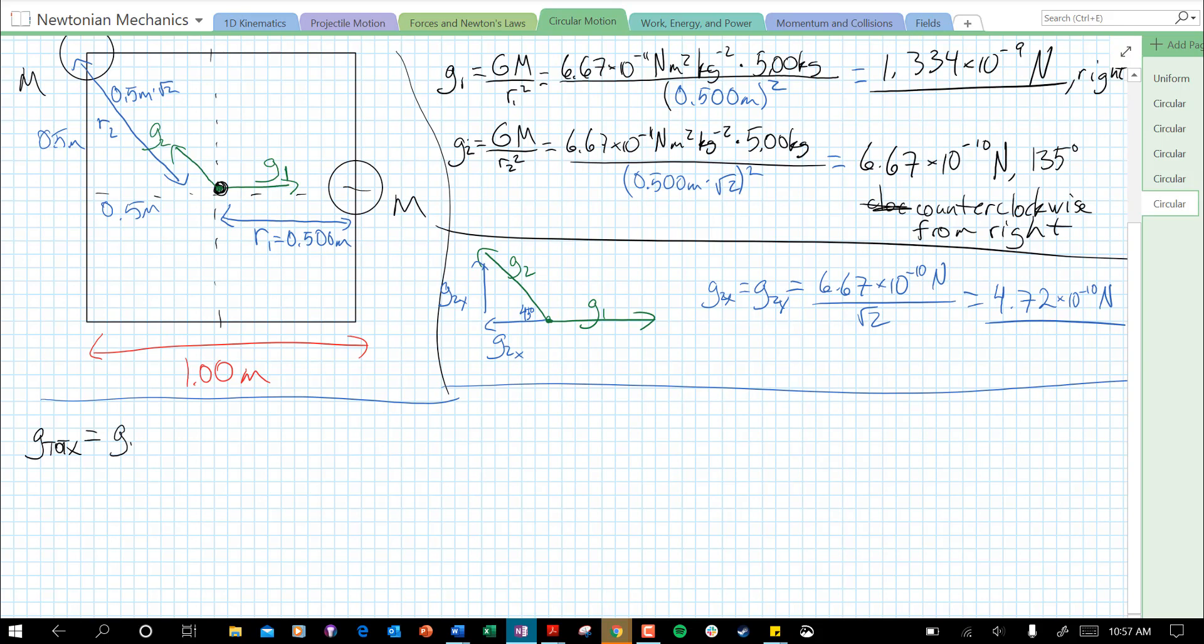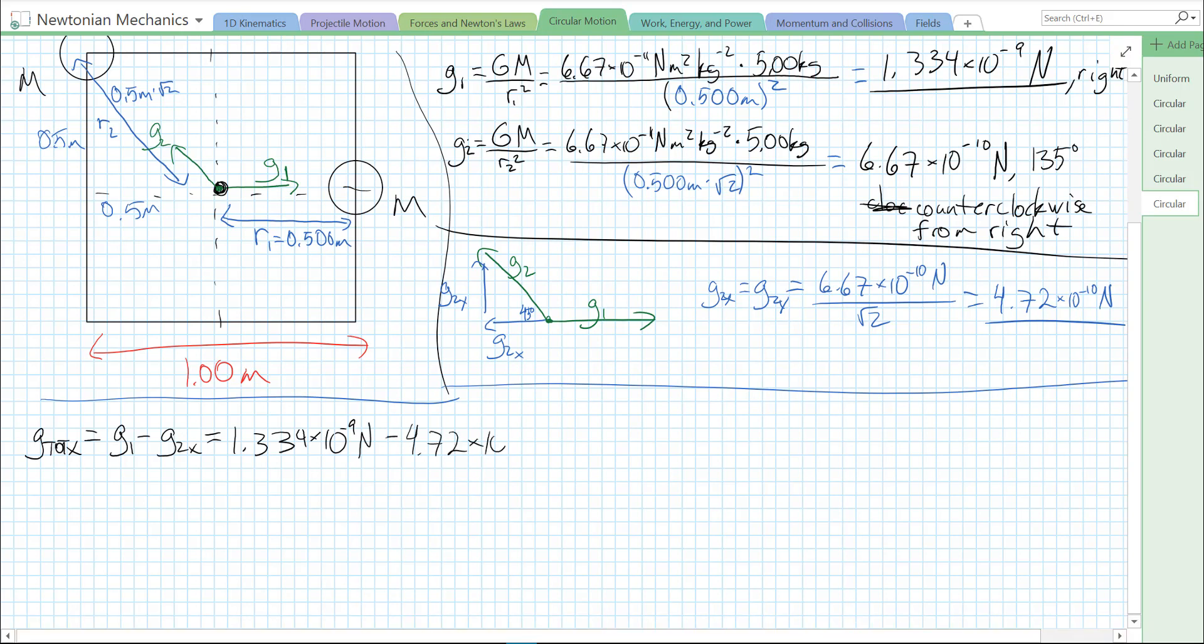It's going to be just G1, and then since G2 is to the left, we'll make that negative. So, G1 minus G2x equals 1.334 times 10 to the minus 9 newtons, minus 4.72 times 10 to the minus 10 newtons. Is 8.62 times 10 to the minus 10 newtons. And since it's positive, that means, since we chose right to be positive, that means it's to the right.